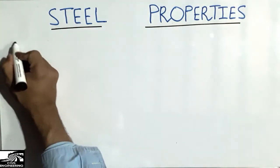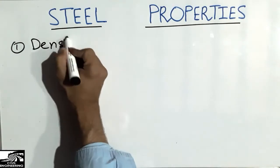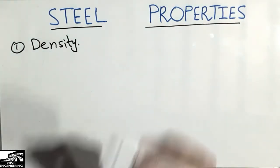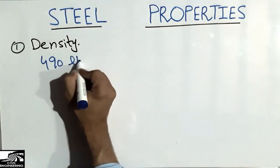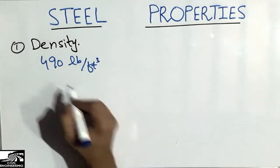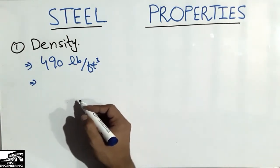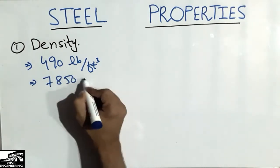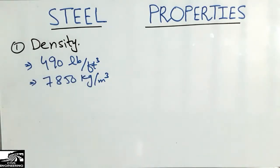The first steel property is the density of steel. Steel has a density of 490 pounds per cubic foot in FPS units, while in SI units it is 7,850 kilograms per cubic meter.